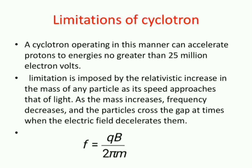Coming to the limitations of the cyclotron, it can accelerate charged particles to energies not greater than 25 million electron volts. The other limitation is that as the particles move with high speed and the speed approaches the speed of light, mass increases. As mass increases, frequency decreases according to the given relation. This violates the resonance condition and the electric field decelerates the charged particles instead of accelerating them.